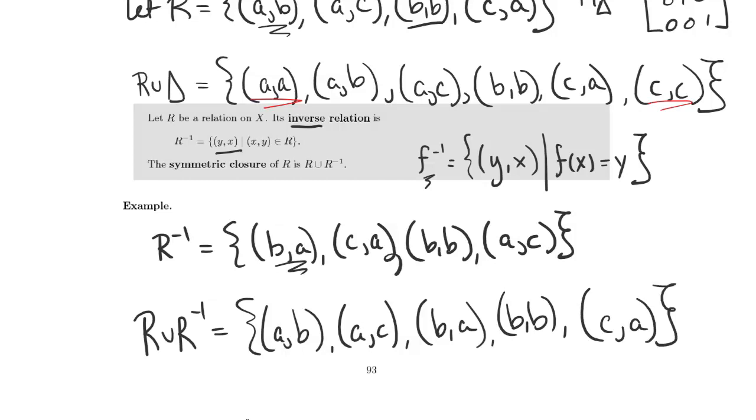So this is the smallest relation that both contains the pairs from R and is also itself symmetric. Notice that when I was adding pairs to R to make the symmetric closure I ignored the reflexive closure because I'm not trying to close under reflexiveness. So I start with R when I'm making the symmetric closure of R, not some other closure that I've already made.